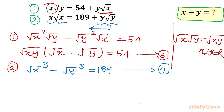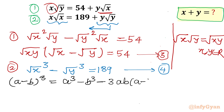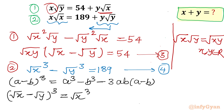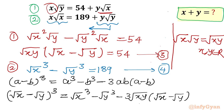Now I will use the algebraic identity (a − b)³ = a³ − b³ − 3ab(a − b). Applying this with a = √x and b = √y, we get: (√x − √y)³ = (√x)³ − (√y)³ − 3·√(xy)·(√x − √y). Everything here corresponds directly to equation 4 and equation 3.